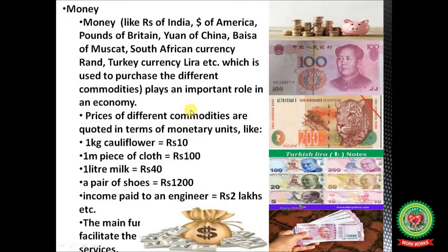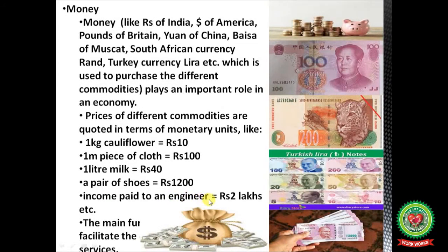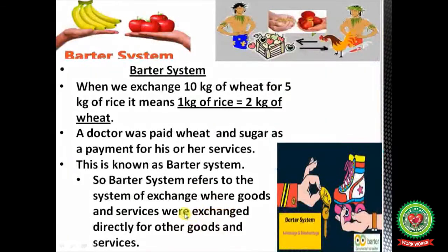Prices of different commodities are quoted in monetary units. For example, cauliflower is priced per kg at rupees 10, one meter of cloth is rupees 100, one liter of milk is rupees 40, a pair of shoes is rupees 1200, and income paid to an engineer, cobbler, doctor, teacher, or chartered accountant is also given in terms of money. The main function of money is to facilitate the exchange of goods and services.